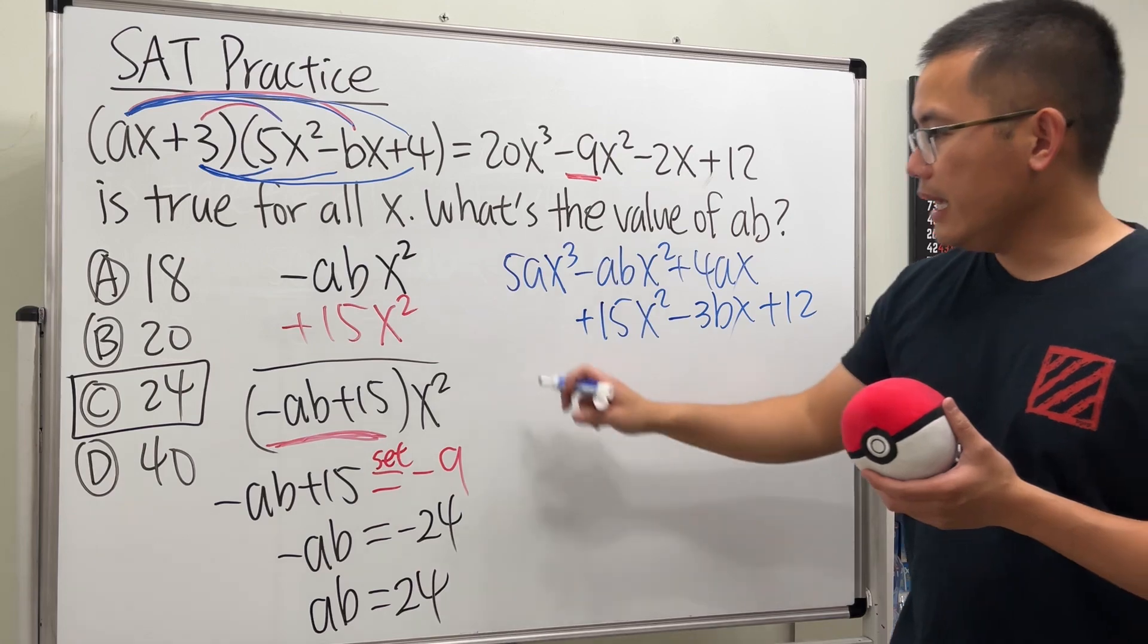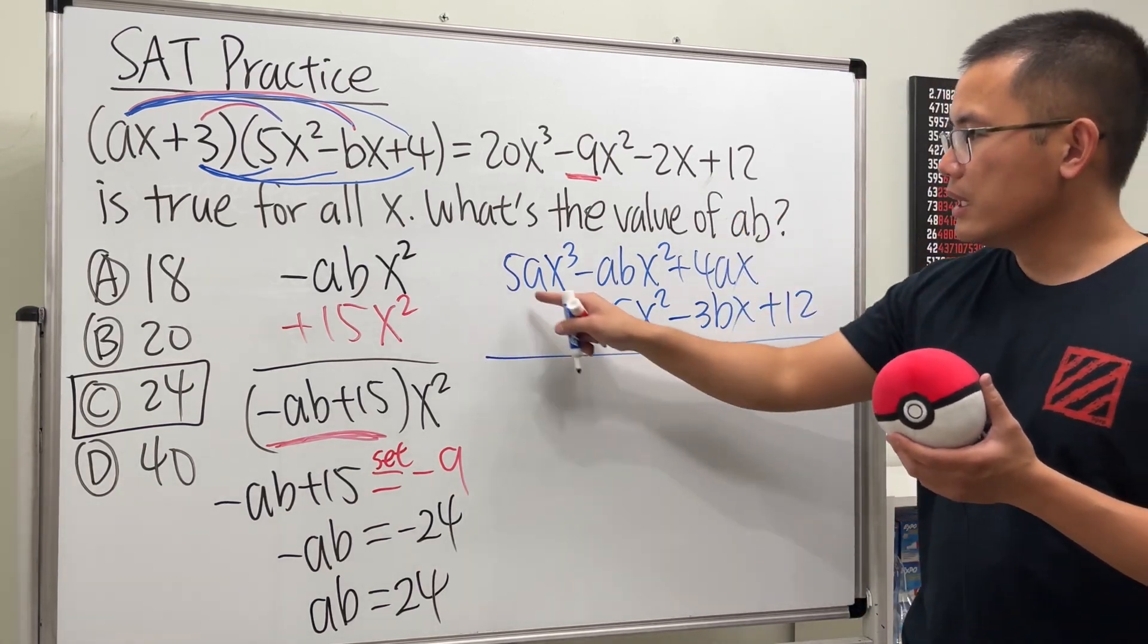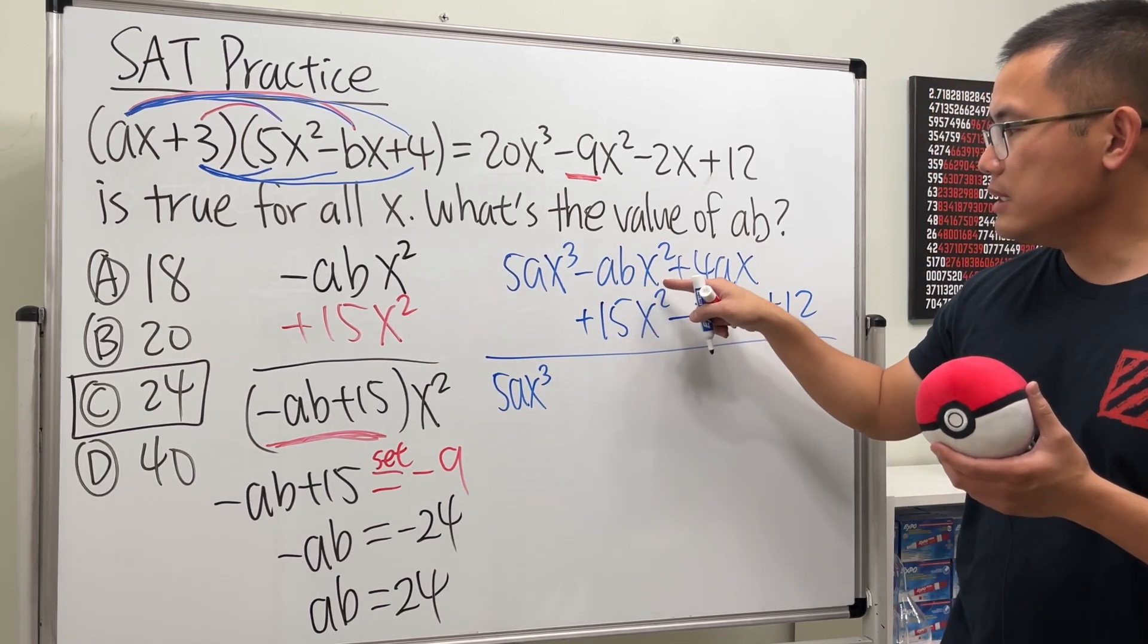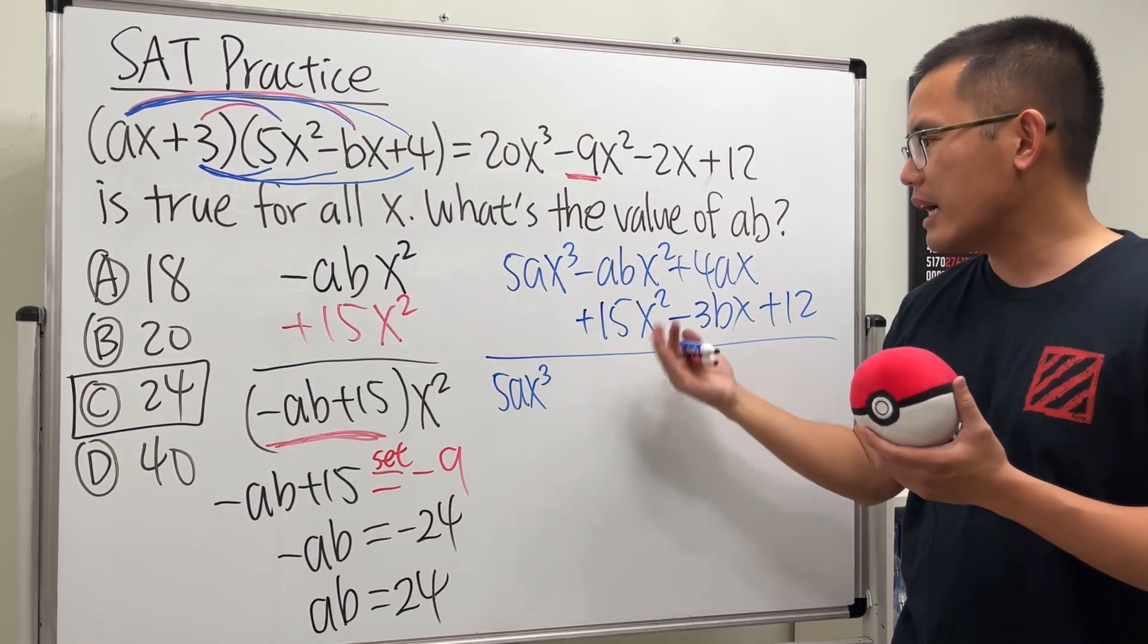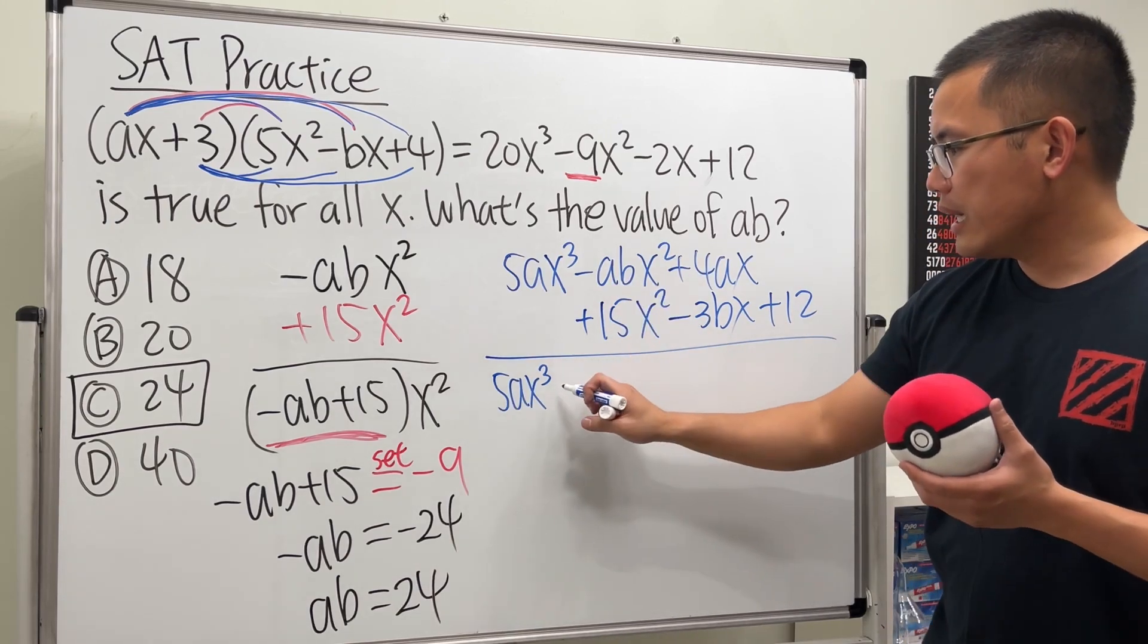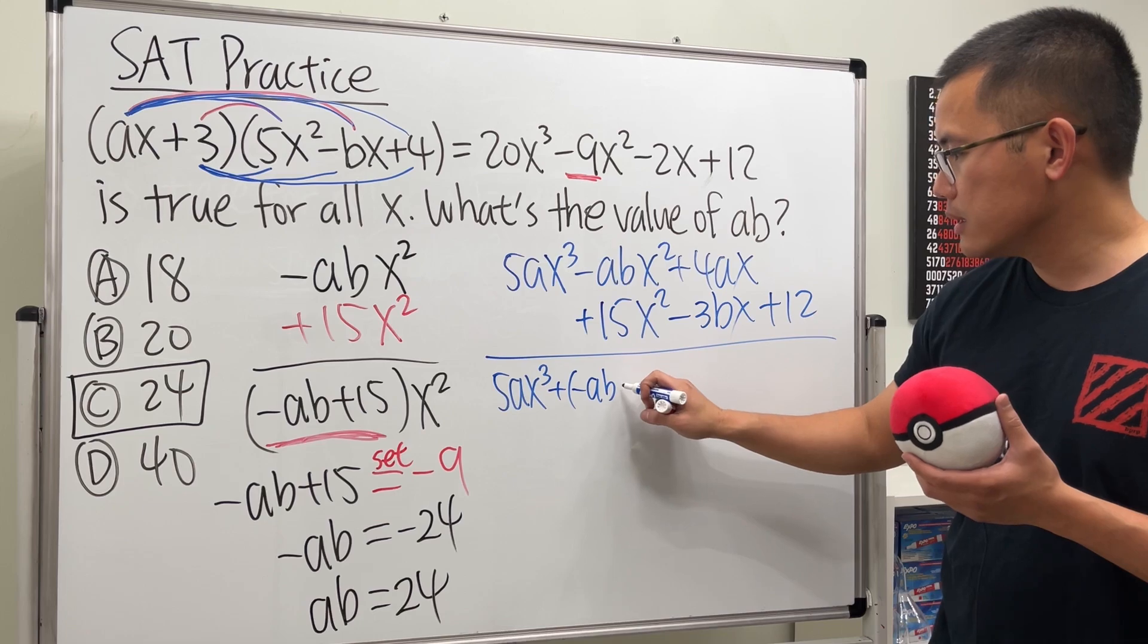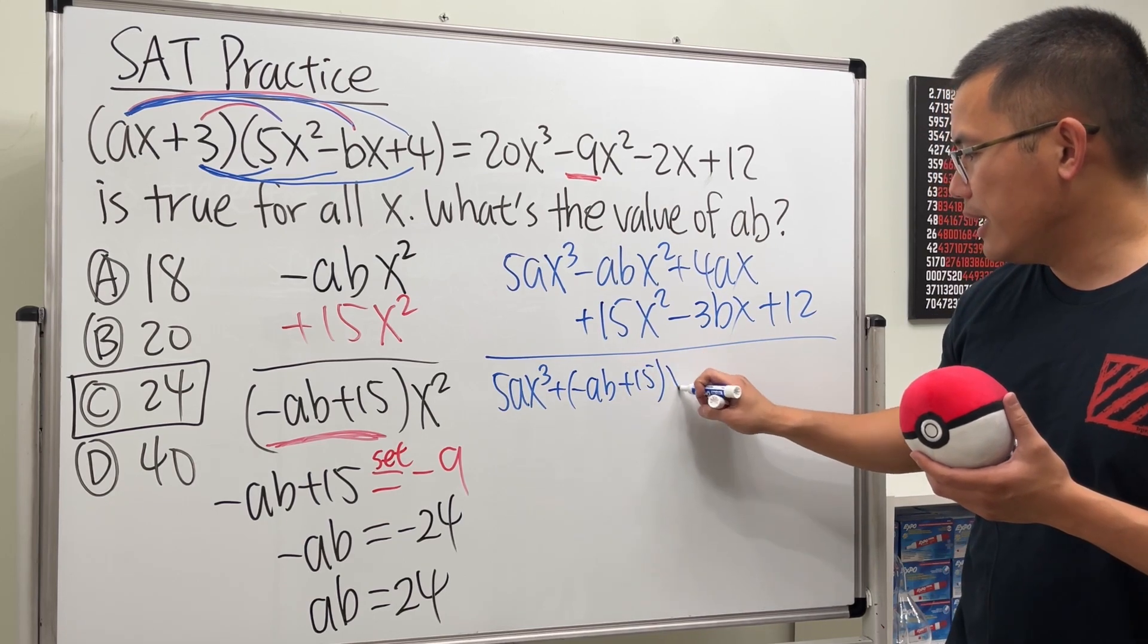All right? And we see that if we combine terms, here, we get 5ax to the third power. And then, combine this, and we can just put the x squared on the outside, just like that. We will get plus, parentheses, this and that inside of the parentheses. And then, x squared. Here,